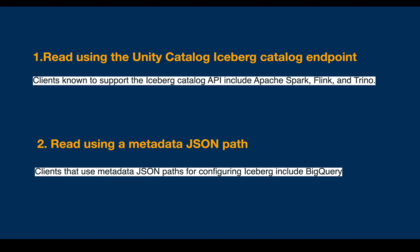The first option is to read Delta Lake with UniForm enabled using the Unity Catalog Iceberg catalog endpoint. Clients known to support the Iceberg catalog API include Apache Spark, Flink, and Trino. The second option is to read using a metadata JSON path. Clients that use the metadata JSON path for configuring Iceberg include BigQuery.